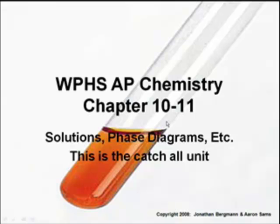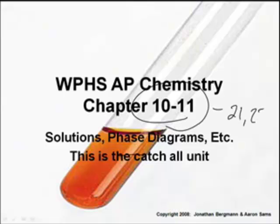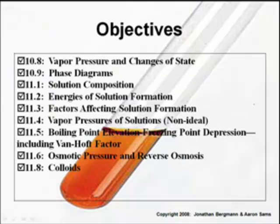So today we're going to start talking about solutions, phase diagrams, etc. — Chapters 10 and 11. And actually if you read on, we'll do 21 and 22 too. 22 is organic and 18 is nuclear. I think we're both wrong. Yeah, we'll check.